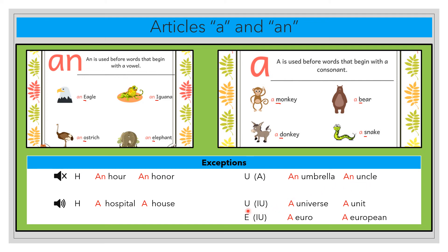When the letter u or the letter e sound like 'you', you are going to use a. For example, universe — it's not 'universe', it's 'universe' — unit, euro, European. A European. So when the letter u or letter e sound like 'you', you use a: a universe, a unit, a euro, a European.